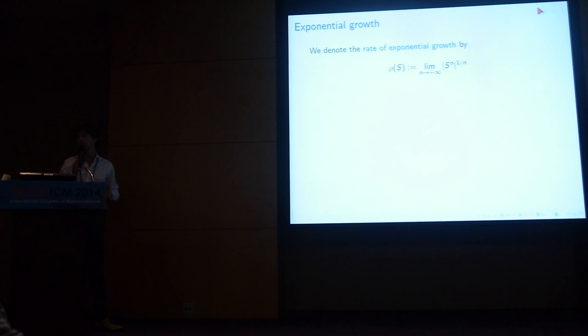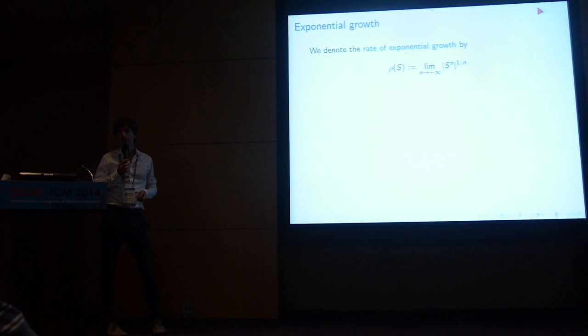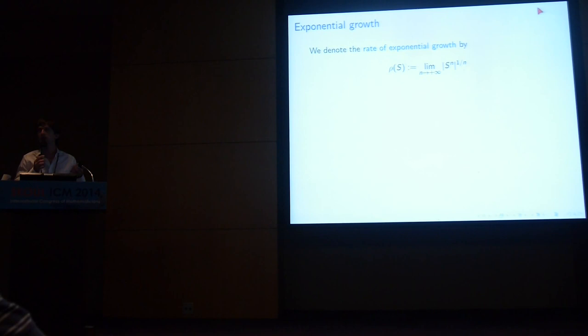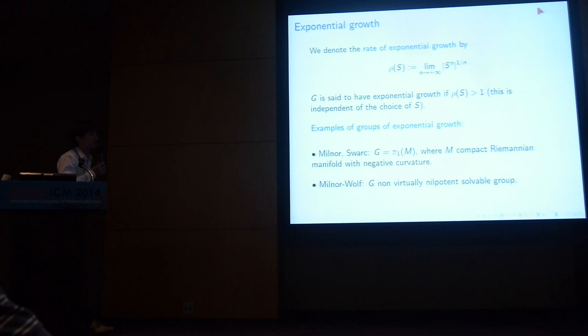If a group has exponential growth, you look at S to the n, take the n-th root of |S^n|, and this has a limit — the rate of exponential growth. This limit exists because |S^n| is sub-multiplicative, so by the sub-multiplicative lemma it has a limit. This limit is bigger than 1, and the fact that it is bigger than 1 does not depend on the choice of generating set, though the rate itself may depend on it.